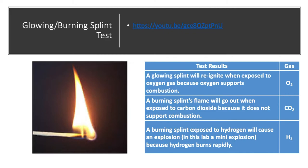You're going to use the glowing and burning splint tests to check for the presence of oxygen, carbon dioxide, and hydrogen. Oxygen supports combustion, so it will reignite a glowing splint. Carbon dioxide does not support combustion, so it will extinguish a burning splint. If a burning splint comes into contact with hydrogen gas, it makes a small explosion. You will need to have a beaker of water standing by to put all burning things into after they are done.